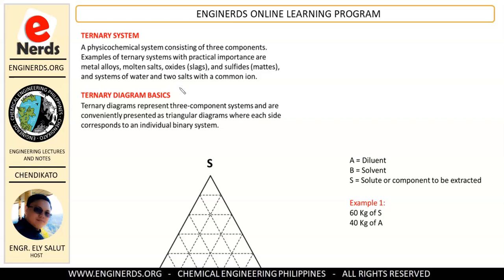So let us talk about the ternary system first. A ternary system is a physical chemical system consisting of three components. Examples of ternary systems with practical importance are metal alloys, molten salts, oxides or slugs, sulfides, and systems of water and two salts with a common ion. Now let us talk about the basics of the ternary diagram.